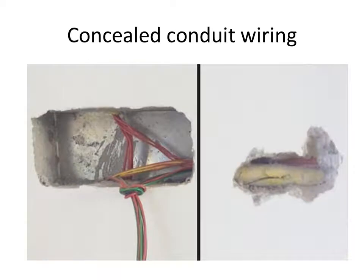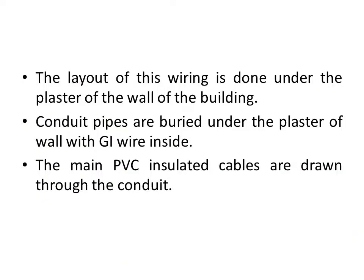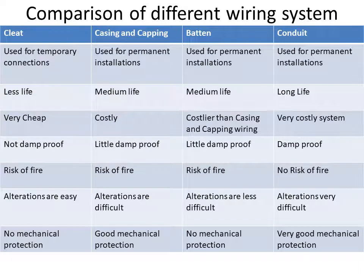In concealed conduit wiring, unlike surface conduit wiring where conduits are laid on the surface, the conduits are laid under the plaster. The layout is done under the plaster of the wall. Conduit wires are buried under the plaster with a galvanized iron wire inside for earthing, and the main PVC insulated cables are drawn through the conduit.